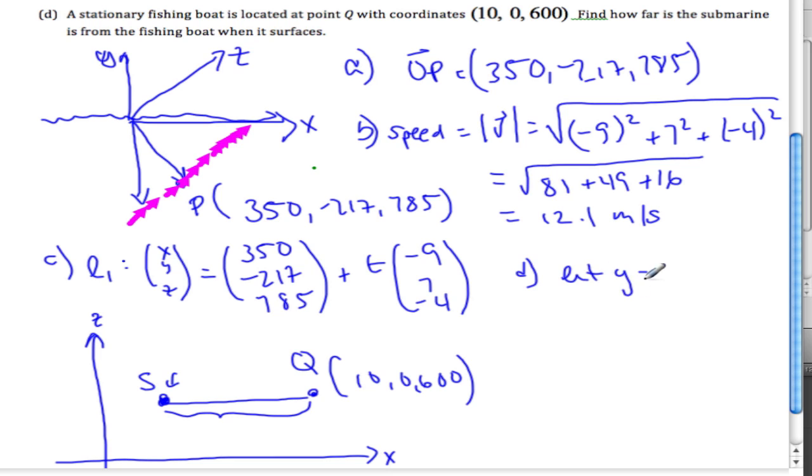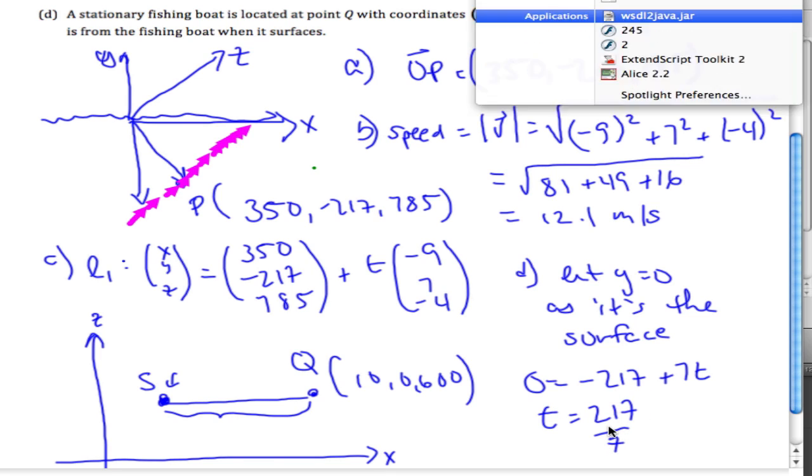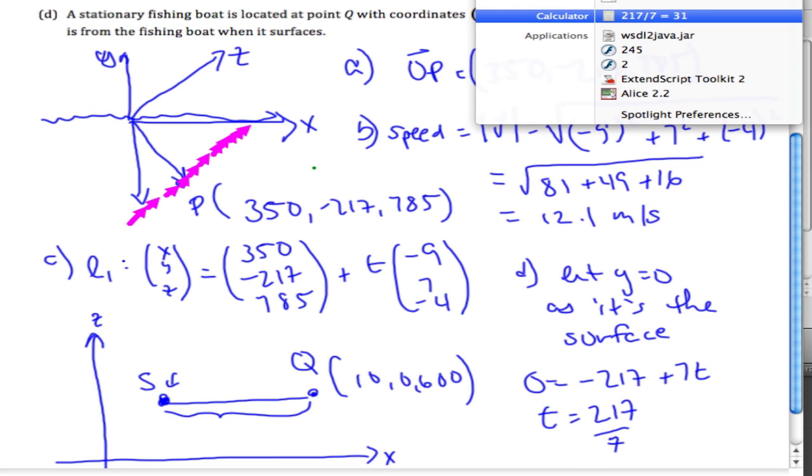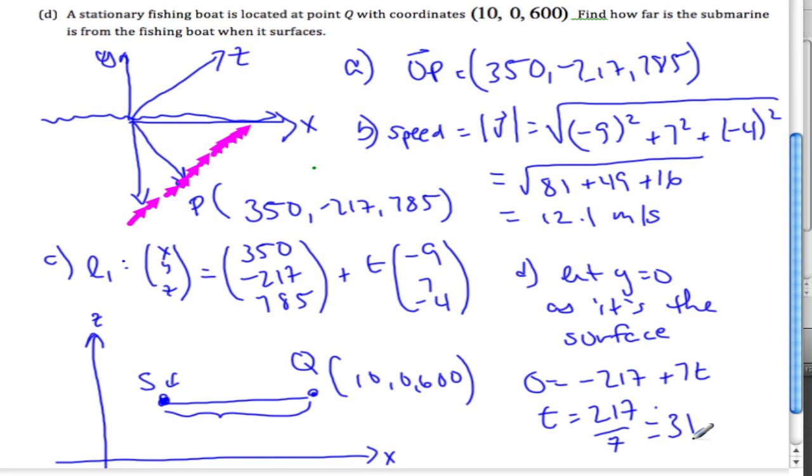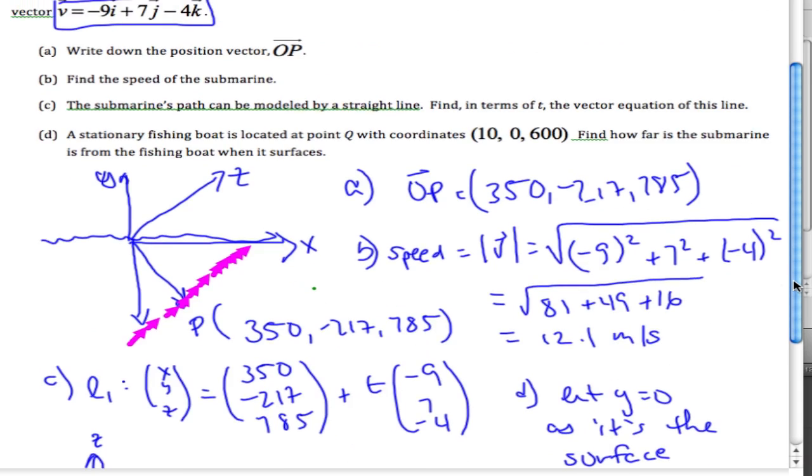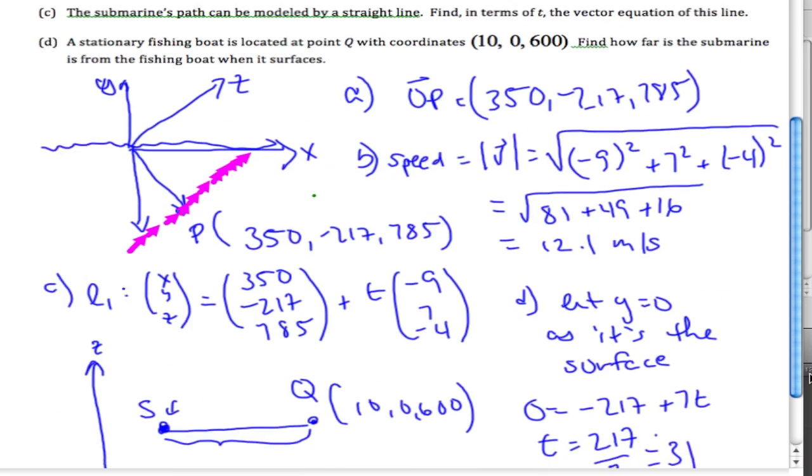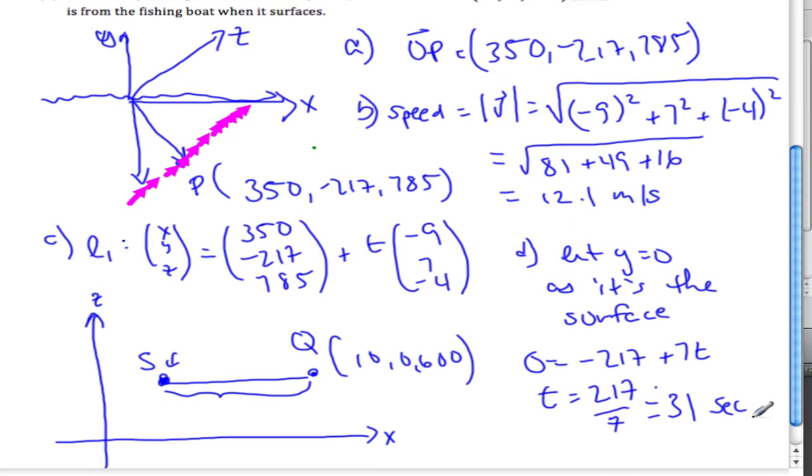In order to find this distance, I need to first find point S where it hits the surface. The key is recognizing when it hits the surface - the y value has to be 0. So I let y equal 0, which means 0 equals -217 + 7t. Solving for t, I get 217 divided by 7, which is 31 seconds.